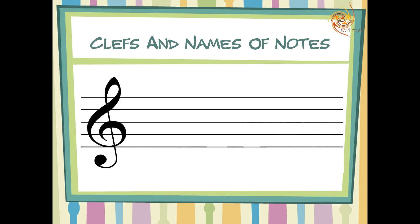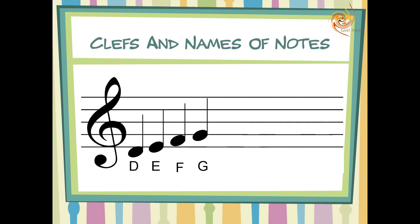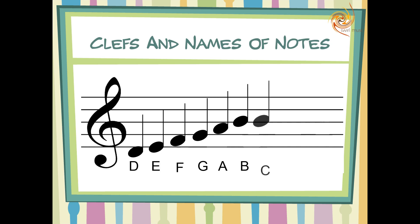So if the note placed on the second line is G, then the space below it will be F, and the first line will be E. If we step below that we will have D. Moving upwards from G we will have A, B, C, D, E, and F.